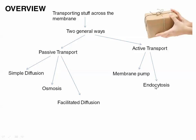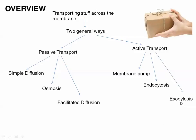Endocytosis — 'endo' sounds like 'into' — is about bringing things into the cell by the folding of the membrane. Exocytosis sounds like 'exit,' and it helps move things out by vesicles fusing with various membranes.